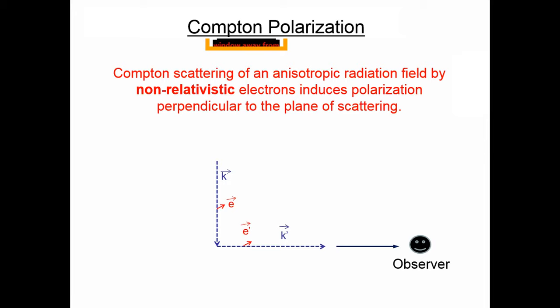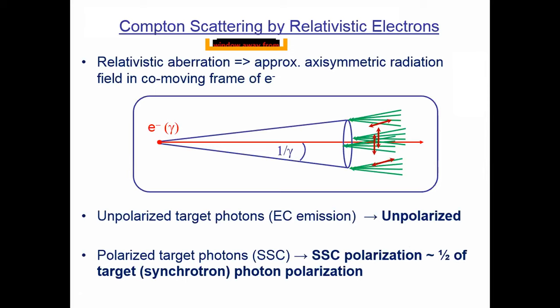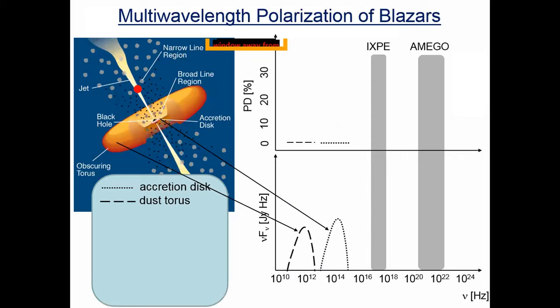This means scattering happens primarily in the plane perpendicular to the polarization vector, and the polarization direction is preserved if scattering happens off non-relativistic electrons. So if we have a radiation beam coming in from the top and an observer looking to the side, scattering at 90 degrees towards the observer filters out photons with polarization perpendicular to the plane of scattering, inducing linear polarization. For scattering off relativistic electrons, if the target photons are unpolarized, relativistic aberration produces an essentially symmetric radiation field, resulting in unpolarized high-energy emission. If target photons are polarized — synchrotron self-Compton — then the SSC polarization is about one half the target synchrotron polarization.